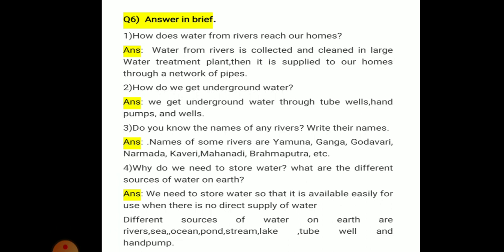Question number 1: How does water from rivers reach our homes? Answer: Water from rivers is collected and cleaned in large water treatment plants. Then it is supplied to our homes through a network of pipes.